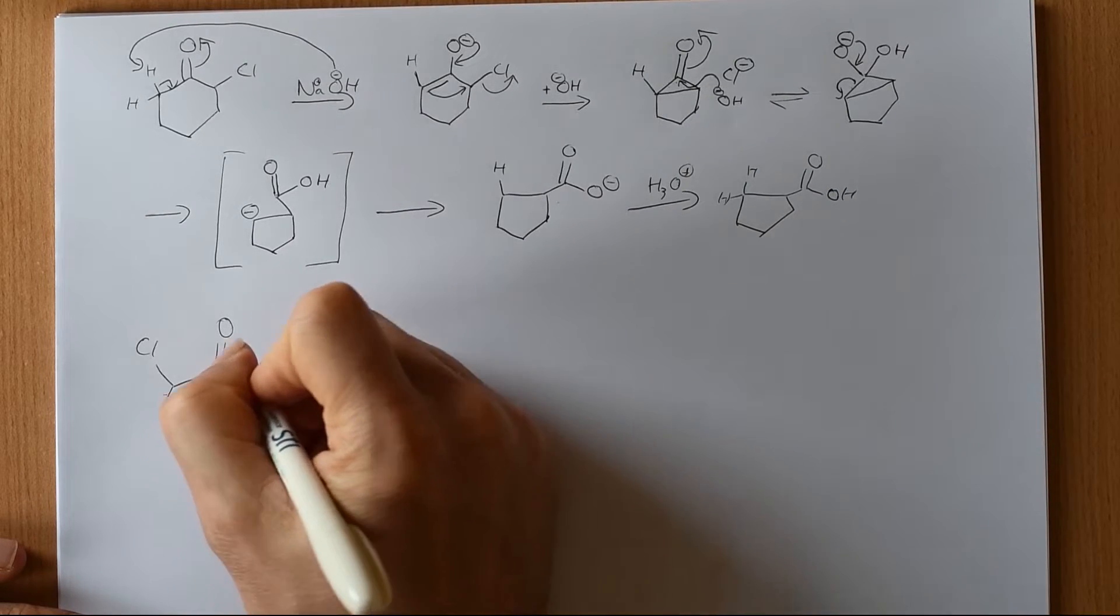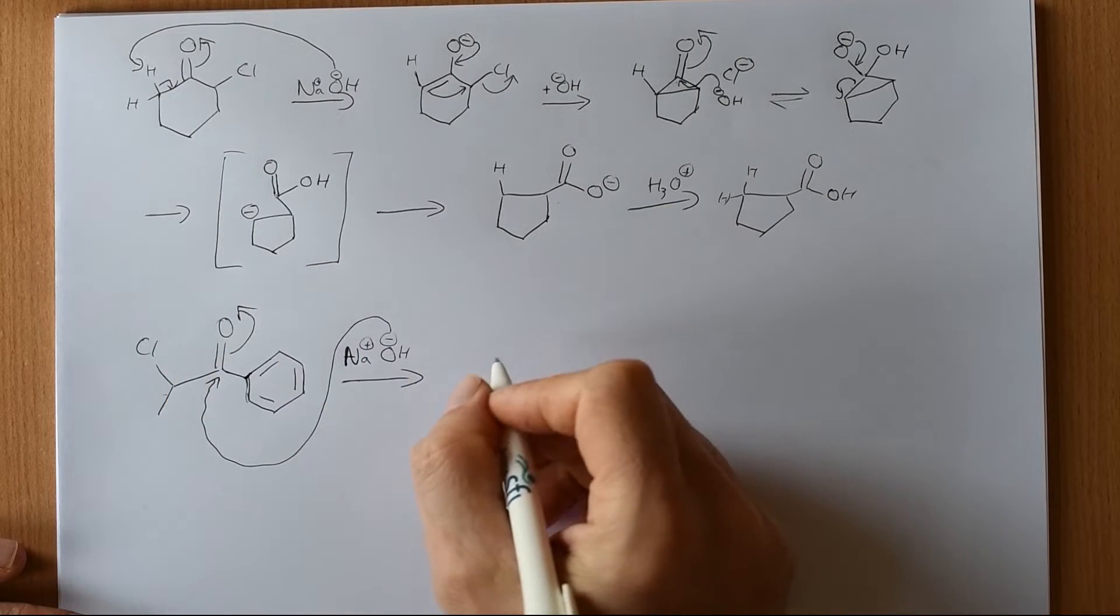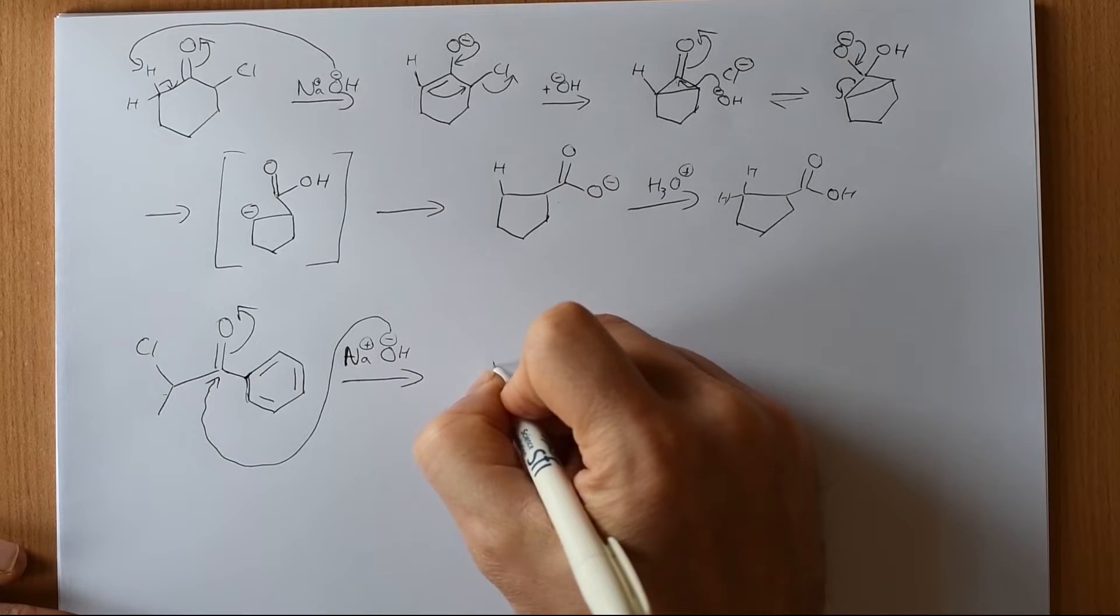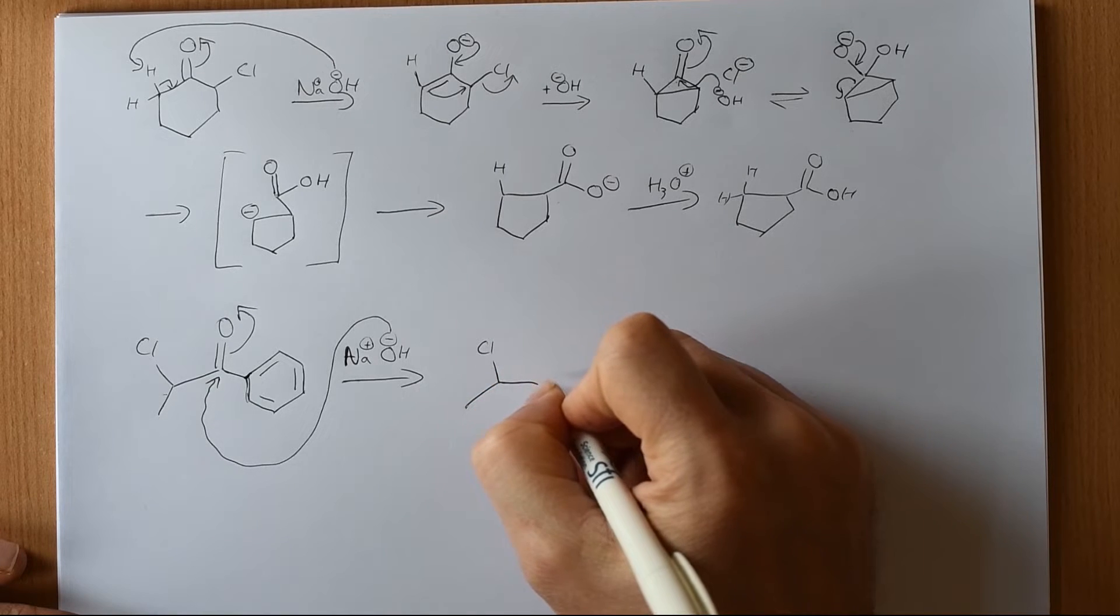And the sodium hydroxide can still attack. If it can't enolize, it can still attack and form a tetrahedral intermediate. And if we look at that tetrahedral intermediate, it might look somewhat familiar.